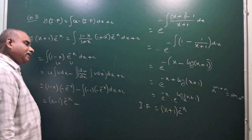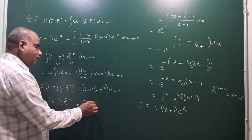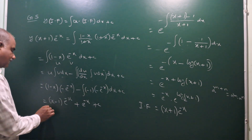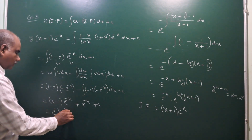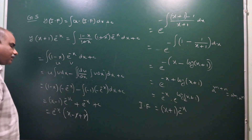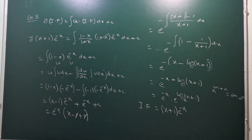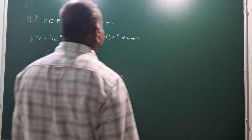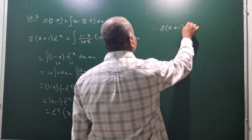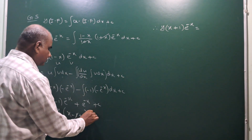Completing the integration gives minus e to the power minus x. So minus into minus gives plus e to the power minus x plus c. Taking e to the power minus x as common, we have (x minus 1) plus 1, so minus 1 plus 1 cancels. Therefore the general solution is y into (x plus 1) e to the power minus x equals x into e to the power minus x plus c.